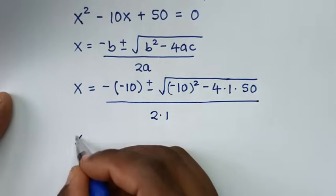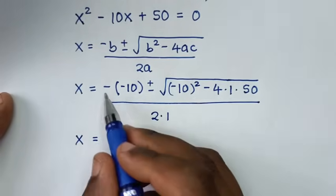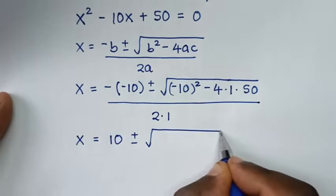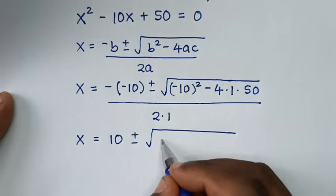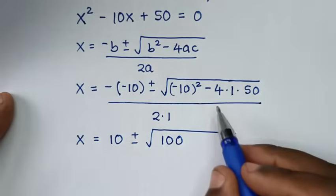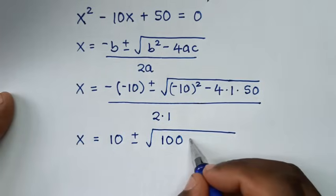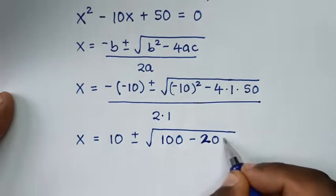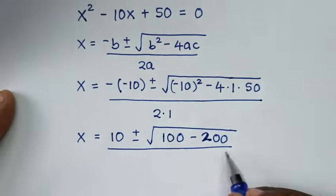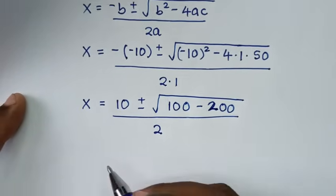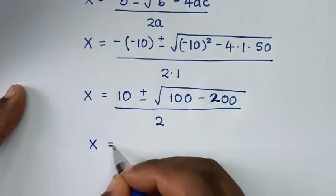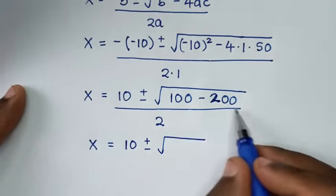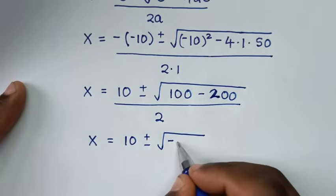Then: negative times negative 10 is positive 10, plus or minus square root of — negative 10 squared is positive 100, minus 4 times 50 is 200 — over 2 times 1, which is 2. So x equals 10 plus or minus square root of (100 minus 200), which is square root of negative 100, over 2.